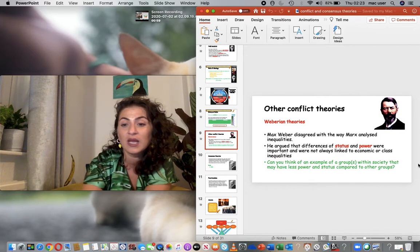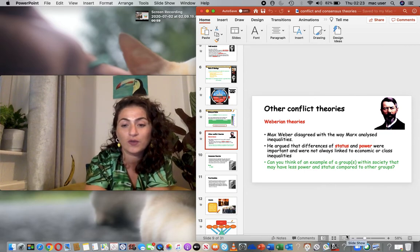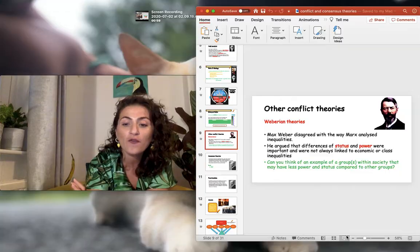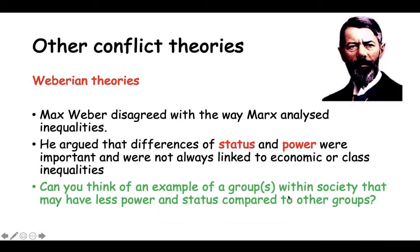Because we're currently looking at Weberian conflict theory, it's very relevant to what's going on in the world right now. We can use current events as an example of groups within society that have less power and status compared to others. Who right now in our society do we know has a lot less power and status compared to other groups, and why? Can you explain why we are treating people differently within our society? Pause the video until you've finished.